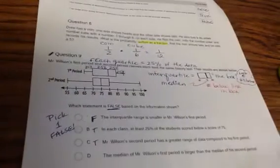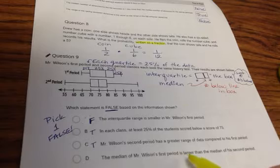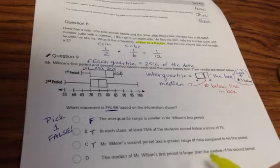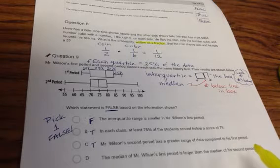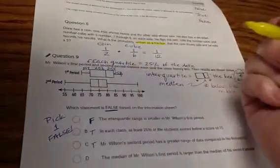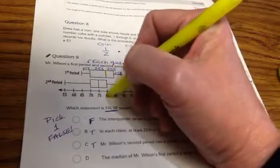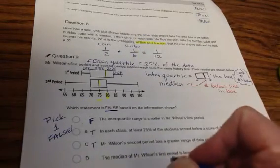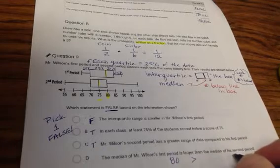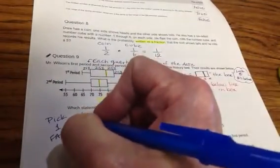Letter D. The median of Mr. Wilson's first period is larger than the median of second period. Remember the median? We're just going to go straight down from the box. Median of first period is 80. Median of second period is 75. So the median of Mr. Wilson's first period, 80, is larger than the median of second period, 75. That one's true. We did the work to double check. We made sure that we picked the one that's false. First choice. Nice.